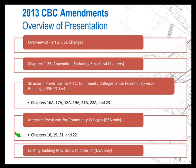Quick overview: I'll do a brief overview of how changes are made in the code. Then we'll get into the non-structural chapters — everything in Part 1, Chapters 1 through 15 — and then the back part of Part 2, Chapters 35 and Appendix J. After that, we'll get into the structural chapters covering testing, inspection, foundations, concrete, and so forth. The last part of the presentation will cover community colleges — applicable only to DSA — and Chapter 34, existing buildings, which will also be only for DSA.